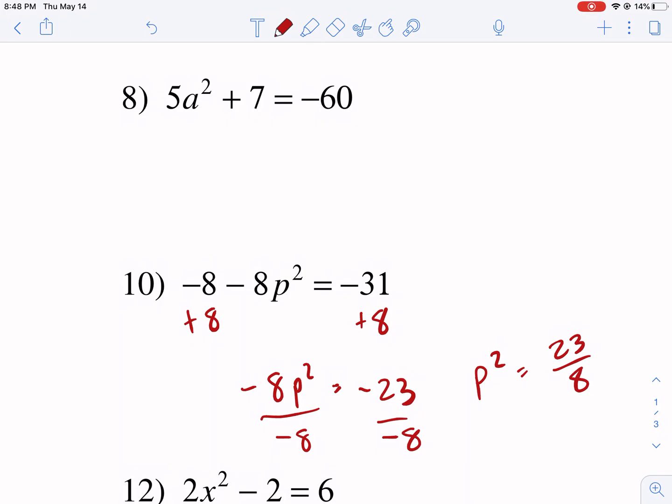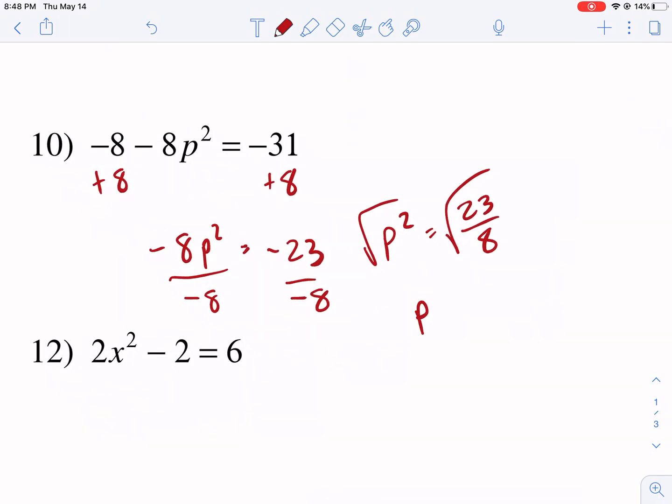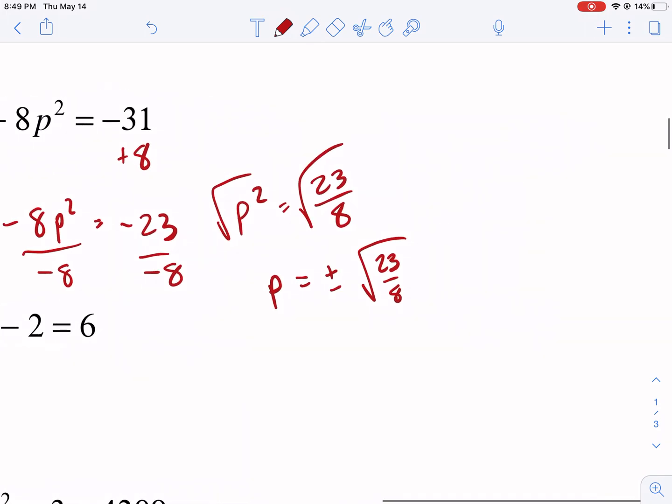And we get p squared equals 23 over 8, because a negative divided by a negative is a positive. So then we take the square root of both sides. And we do p equals plus or minus the square root of 23 over 8. Now, if you're asked to rationalize this, you could rationalize it. For now, I'm just going to say, take the decimal. There's another video I have on how to rationalize it. I'll give you a quick demo on this.